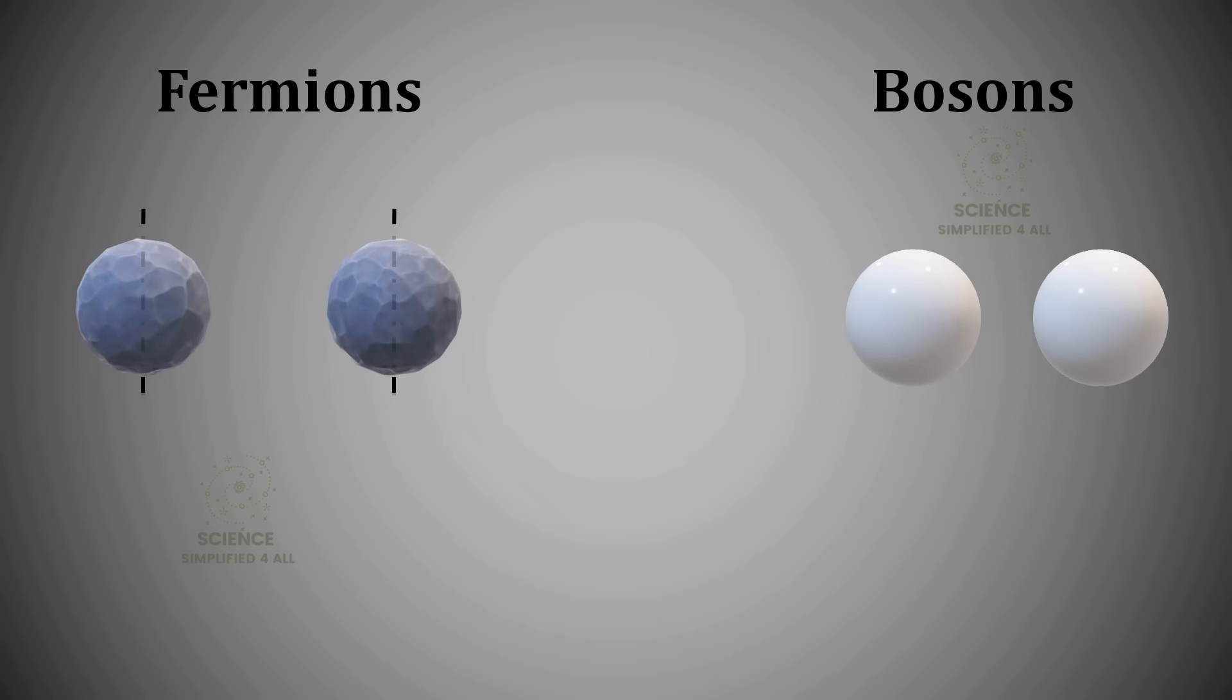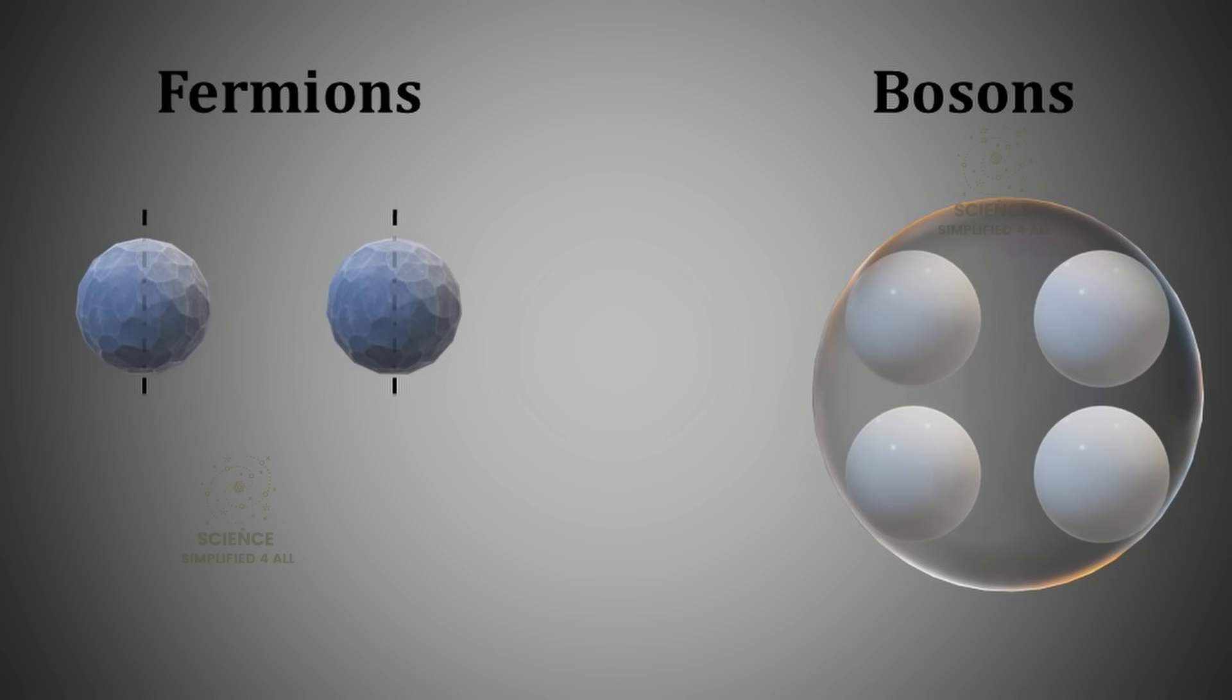In simple terms, just like two solid objects cannot occupy the same place at the same time, two fermions can never share the same set of quantum properties. Even if every other parameter of two fermions is identical, their spin direction will be different. If one spins clockwise, the other will spin anticlockwise. Bosons, however, do not have this restriction. Because of their spin nature, many bosons can exist in exactly the same quantum state.